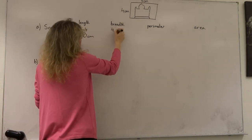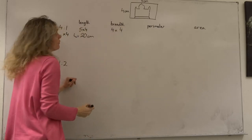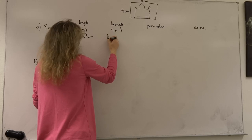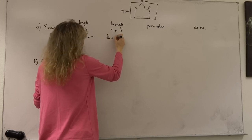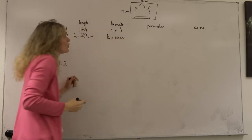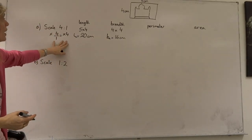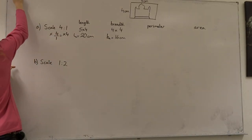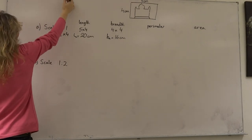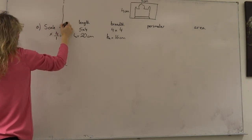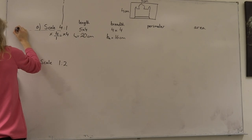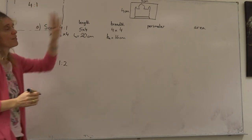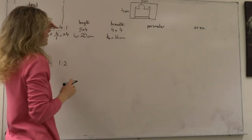The breadth of our original 4 centimetres is multiplied by the scale factor 4, giving 4 times 4. So the breadth of our new picture would be 16 centimetres. In our books we would draw a picture that is 20 centimetres long and 16 centimetres wide — this is approximately a scale of 4 to 1 of that particular picture.